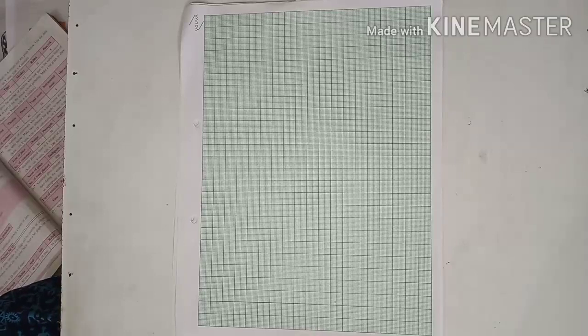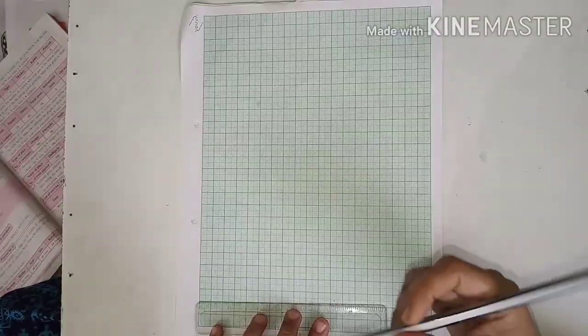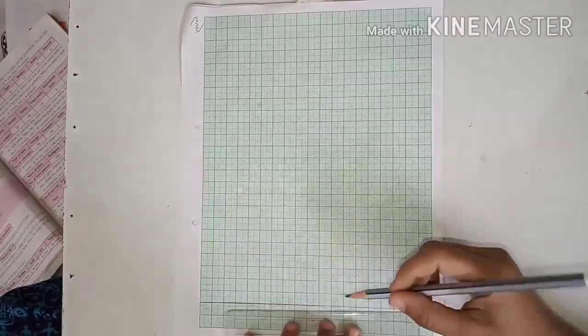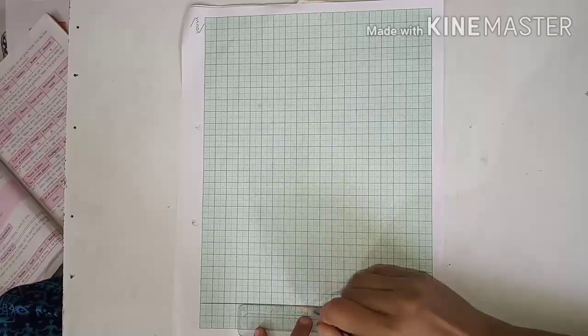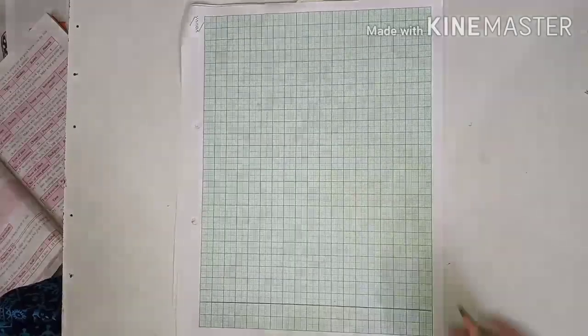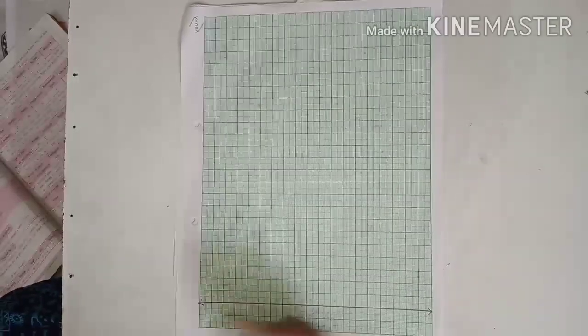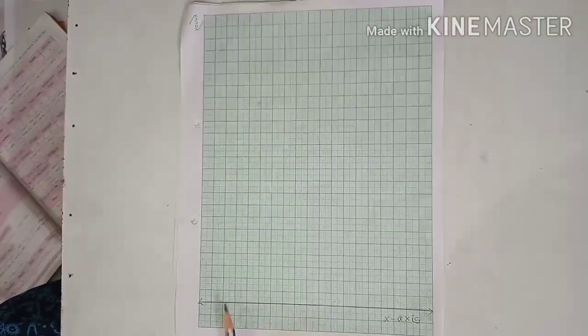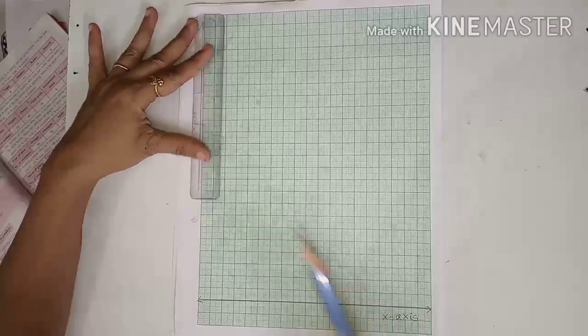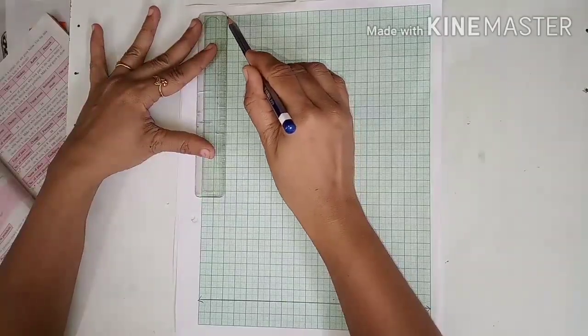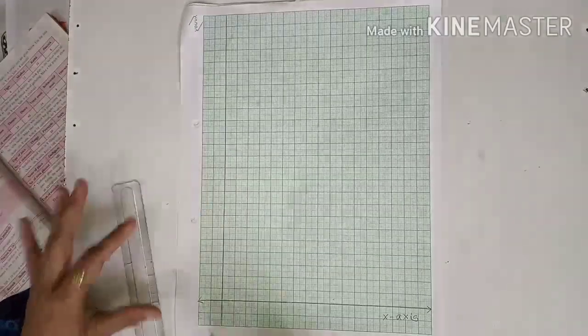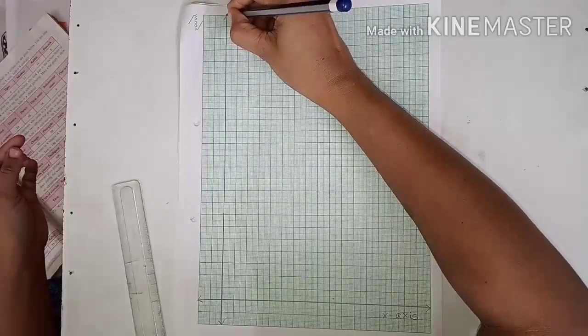Now here I have taken a graph paper. First of all I am going to draw a horizontal line that is x-axis. Okay, this is x-axis. Now the line perpendicular to x-axis in the left side of the paper is vertical line, that is y-axis. This is y-axis.